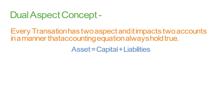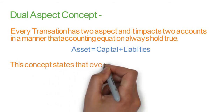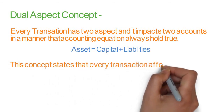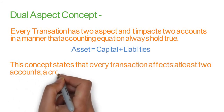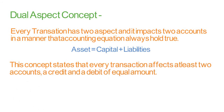This concept states that every transaction affects at least two accounts — a debit and a credit of equal amount. Debit will always be equal to the credit side. Let's take an example to understand this better.